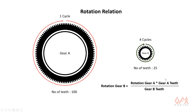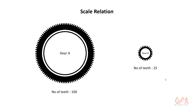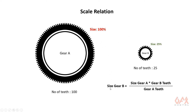Now we move on to scale. With these numbers you can easily identify that if we consider gear A as 100% size, then gear B should be 25%. The equation says that size of gear B is equal to size of gear A multiplied by the number of teeth in B divided by the number of teeth in A.